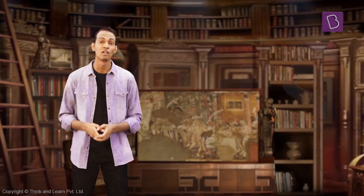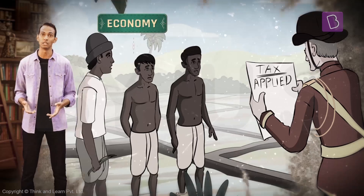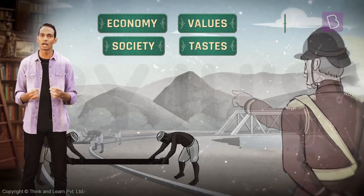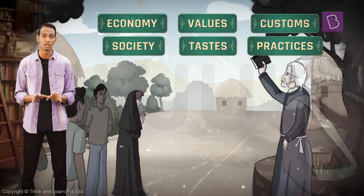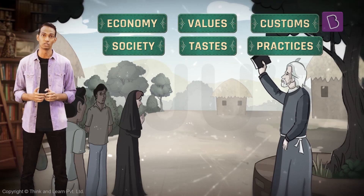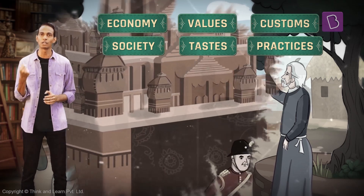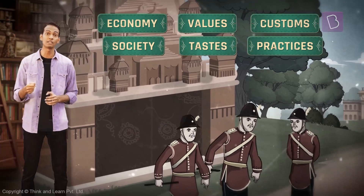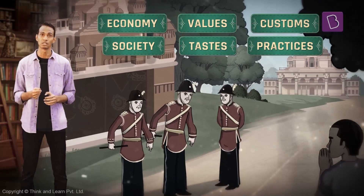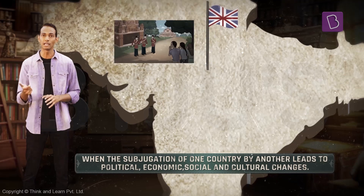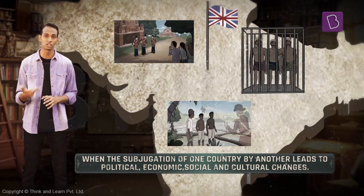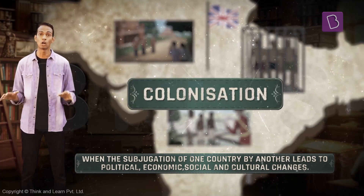How so? Did the British not bring about any change? Well, they did. The British brought about changes to the economy, the society, the values, tastes, customs, and practices of India, while ensuring that these changes were favorable to them and not to Indians. They subjugated and controlled the people of India by endorsing the apparent superiority of the Europeans. When the subjugation of one country by another leads to political, economic, social, and cultural changes, we refer to the process as colonization.